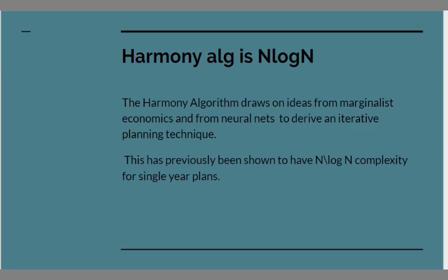The harmony algorithm which as I say was originally published in the late 80s is of order n log n. It draws on ideas from marginal economics and from neural nets to derive an iterative surface planning technique and we've previously published results to show that it was of n log n complexity for single year plans. The issue that I never attempted to address back in the late 80s early 90s was whether or not it would work with n log n complexity for multi-year plans. Now that's something that I've now done and confirmed that it retains the same nice complexity properties.